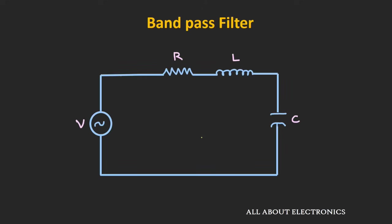One way is to design this bandpass filter using the series RLC circuit. Particularly, when you take the output across the resistor, the response of this circuit will be very similar to the response of a bandpass filter. We have already seen this in the earlier videos on series resonance in the RLC circuit.